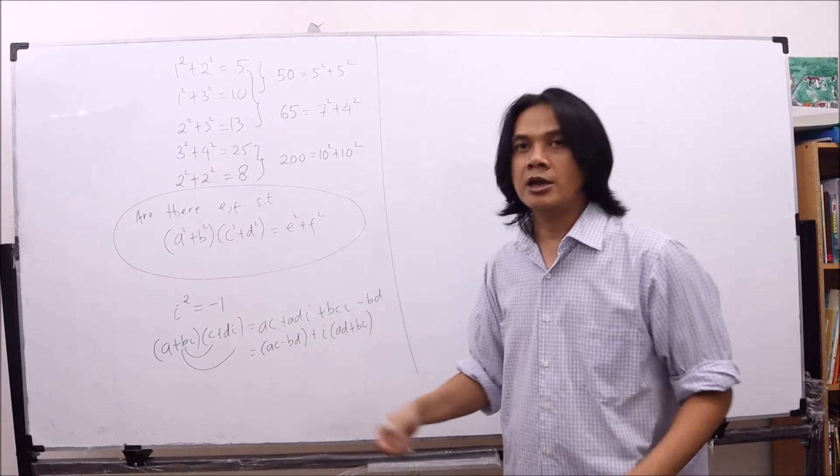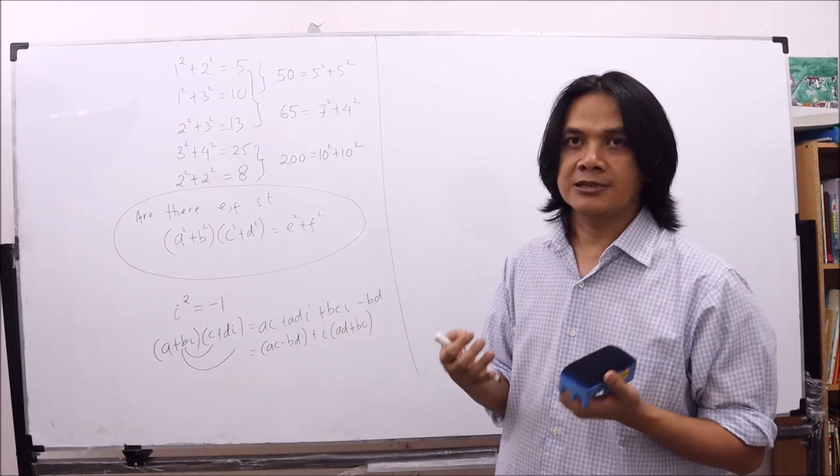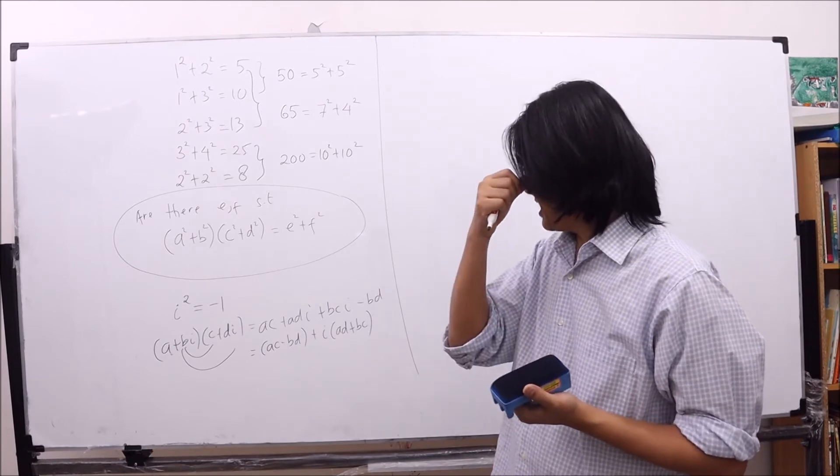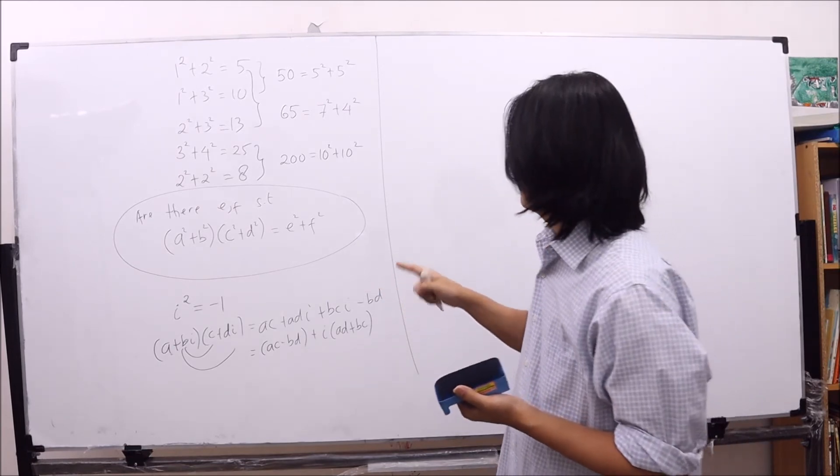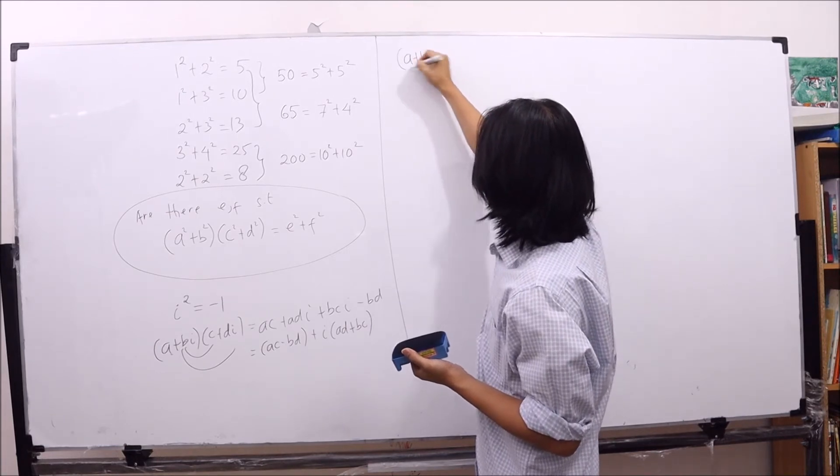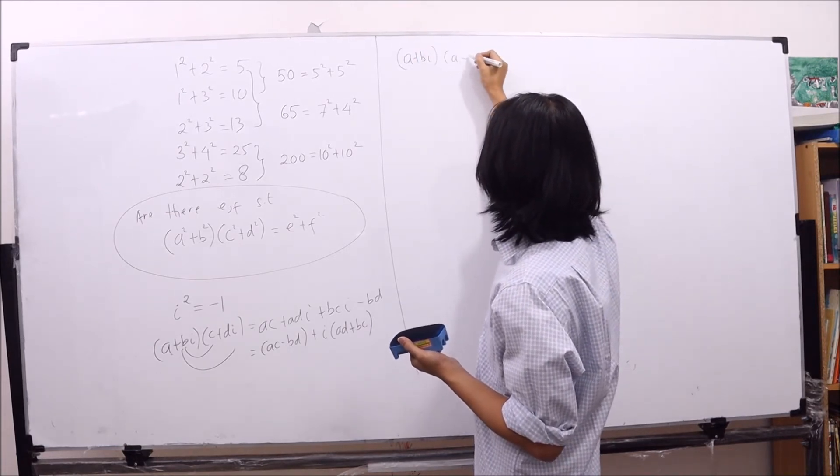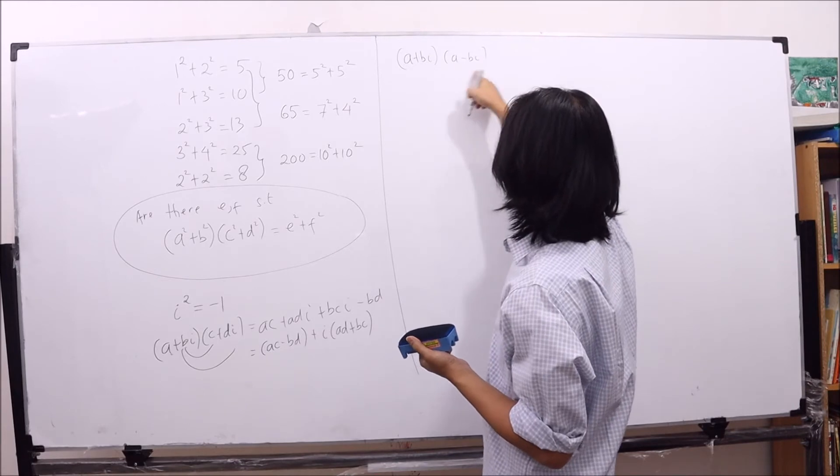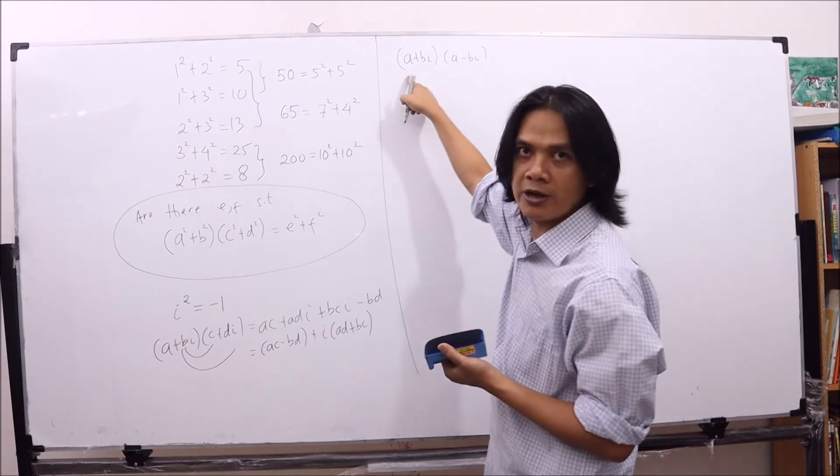So we have a c minus b d plus i times a d plus b c. This is, in general, how we multiply two complex numbers. In particular, if we multiply a plus b i and a minus b i, this will be called as the conjugate of a plus b i.